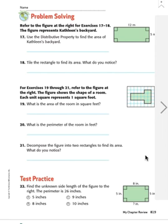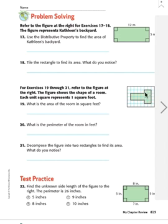Number 21 says decompose the figure into two rectangles to find its area. Let's go ahead and draw a line right here to make these into two separate figures. Then we're going to count the squares in each figure and add them together. So this one first: 1, 2, 3, 4, 5, 6, 7, 8. And now let's find the area of this figure: 1, 2, 3, 4, 5, 6, 7, 8 — another 8. So if I add those two together, 8 plus 8, I come up with 16 square feet.